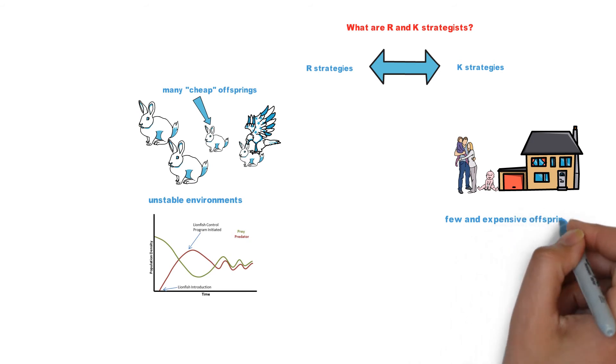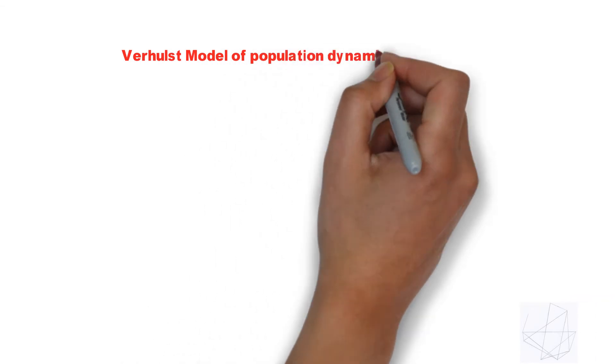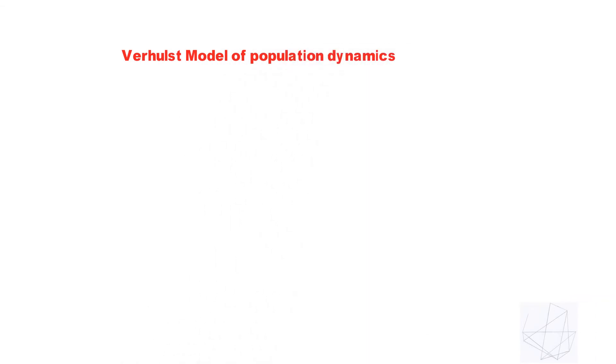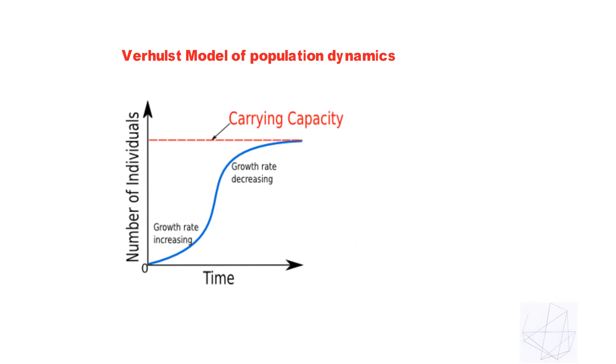These terms R and K are drawn from standard ecological algebra in a simplified Verhulst model of population dynamics. On a chart, the Y axis is N for population and X axis for time, where N is population, R is maximum growth rate, and K is carrying capacity.